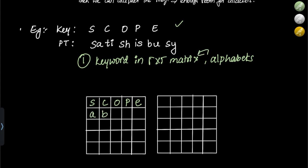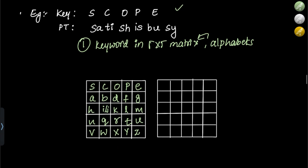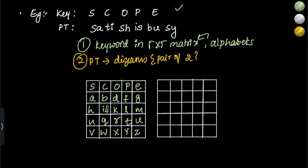After filling SCOPE, we fill the remaining alphabets in order: A, B — C is already there — D — E is already there — F, G, H, I/J, L, M, N — O and P are there — Q, R — S is there — T, U, V, W, X, Y, Z. The matrix is now complete.